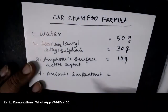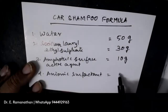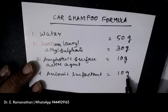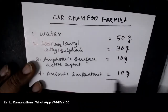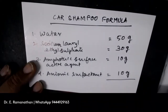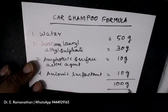Then you can add an anionic surfactant as well for the remaining portion. This formula will be almost 25% active, so you can dilute it at a ratio of 1 to 3 or 1 to 4. The net quantity is 100 grams, all by weight only.